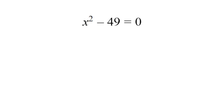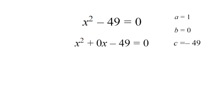Moving on to the next example: x squared minus 49 equals zero. We have an ax squared term and a c term but no bx term. We can rewrite this as x squared plus 0x minus 49 equals zero, so a equals 1, b equals 0, and c equals negative 49. We need two numbers that add up to 0 and multiply to negative 49. If two numbers add up to 0, they cancel each other — like 1 and negative 1.